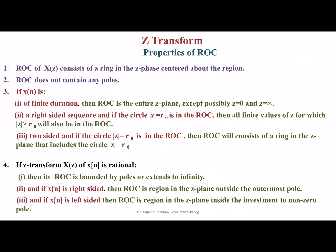So we have some properties to identify the ROC. First, the ROC of X(z) consists of a ring in the Z-plane centered at the origin. Second, the ROC does not contain any pole. Third, if X(n) is of finite duration, then the ROC is the entire Z-plane except possibly Z equals 0 and Z equals infinity. Fourth, for a right-sided sequence, if the circle |Z| = R₀ is in the ROC, then all finite values of Z for which |Z| > R₀ will also be in the ROC.